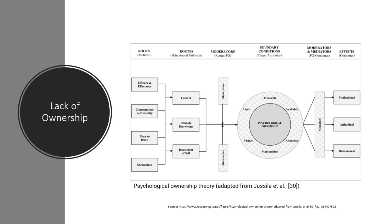The place you dwell, along with your simulation of where you want to be, that creates your investment or yourself. These three behavioral pathways — control, immediate and intimate knowledge, and investment — these three things create ownership: psychological ownership. A feeling of openness, accessible, available, attractive, visible, and your ability to manipulate or control that environment or situation.